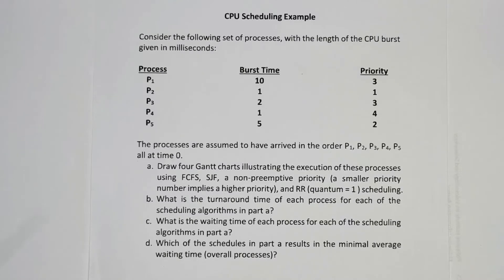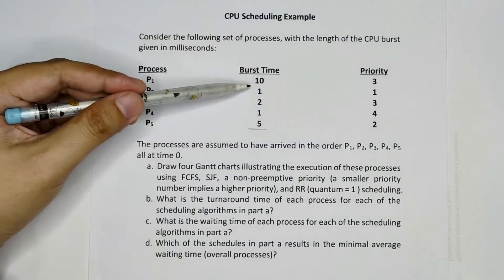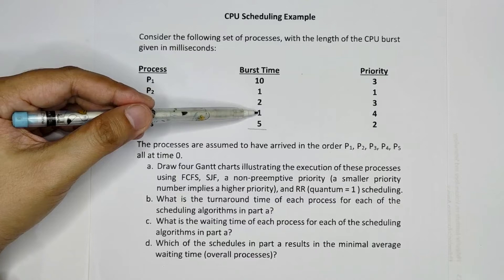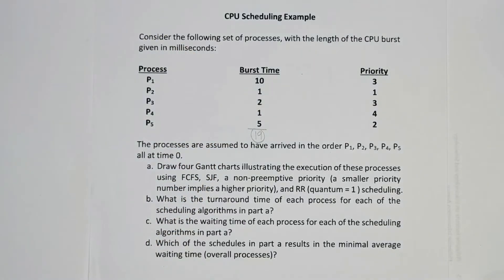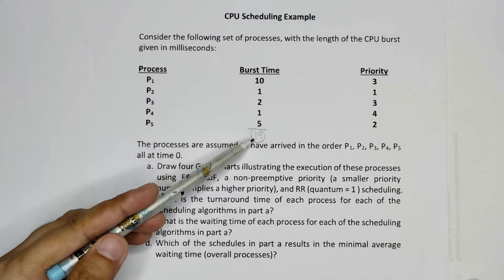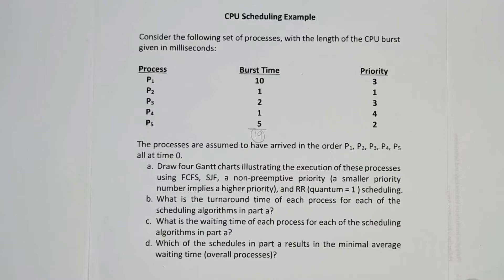Before we start, let's calculate the total burst time of all processes. We have 10 plus 1 is 11, plus 2 is 13, plus 1 is 14, plus 5 equals 19. We need the total burst time so that for every Gantt chart, the maximum total should always equal 19. It should not differ across FCFS, SJF, non-preemptive priority, and round robin — it should always be exactly 19 milliseconds.